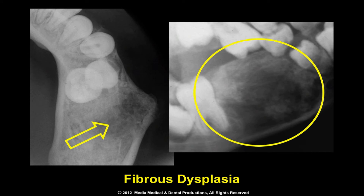Osteomyelitis may be distinguished from fibrous dysplasia by observation of the manner in which new bone is laid down. In fibrous dysplasia, new bone is produced within the cortical plates causing an expansion of the plates, while in osteomyelitis bone is produced by the periosteum outside the cortical plate. This distinction may be difficult to make when chronic osteomyelitis has destroyed the original cortex.